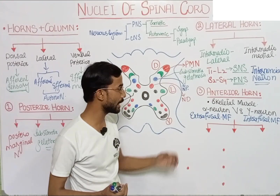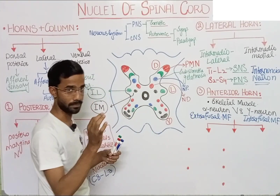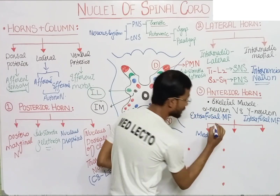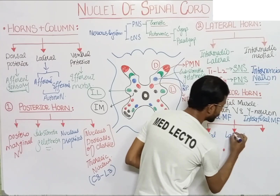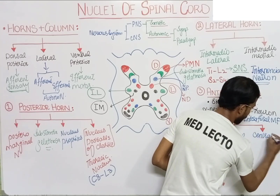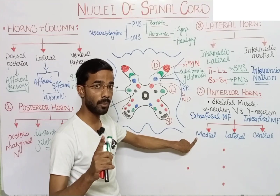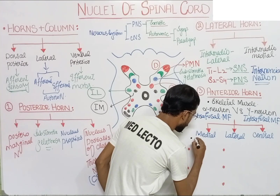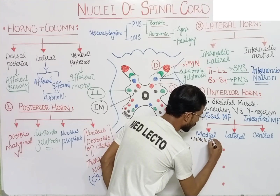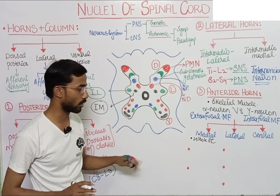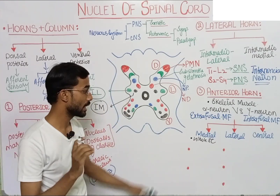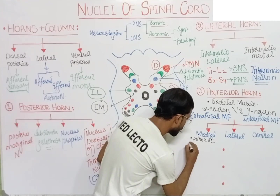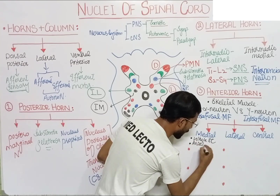We also categorize the anterior horn nuclei into different groups. The first is the medial part, the second is the lateral part, and the third is the central part. The medial nuclei are present all over the length of the spinal cord, and they supply nerves to the axial muscles — muscles present at the axial side of the body, such as the muscles of the neck and the trunk.